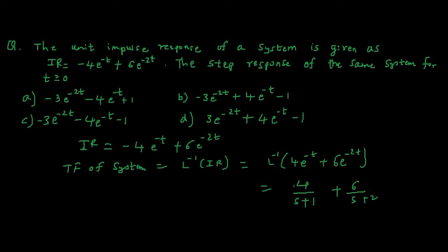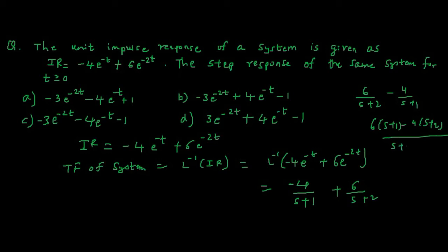So this is equal to minus 4 upon s plus 1 plus 6 upon s plus 2. If you simplify this — 6 upon s plus 2 minus 4 upon s plus 1 — you get 6 times (s plus 1) minus 4 times (s plus 2), all over (s plus 1)(s plus 2). This gives 2s minus 2 upon (s plus 1)(s plus 2).